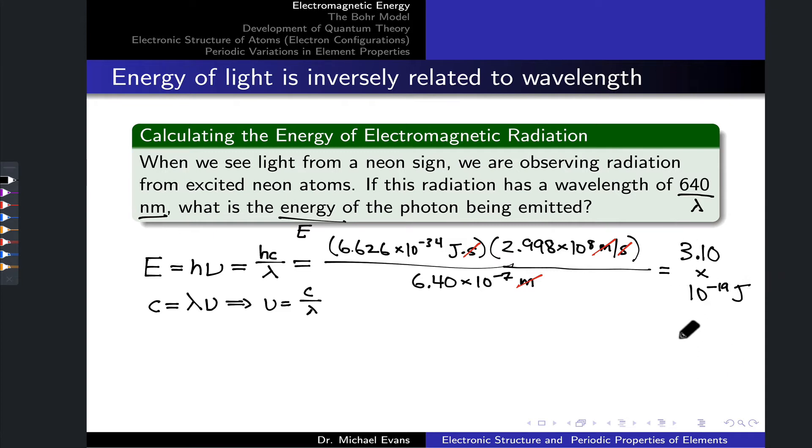The final result is 3.10 times 10 to the negative 19 joules. So the energy of a single photon is very, very small. When we start talking about a mole of photons, multiplying this by Avogadro's number, we're back up to more familiar territory, something like joules or kilojoules. But for an individual photon, 10 to the negative 19, 10 to the negative 20 is pretty typical.